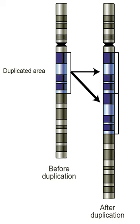Gene duplication, or chromosomal duplication, or gene amplification, is a major mechanism through which new genetic material is generated during molecular evolution. It can be defined as any duplication of a region of DNA that contains a gene. Gene duplications can arise as products of several types of errors in DNA replication and repair machinery, as well as through fortuitous capture by selfish genetic elements.